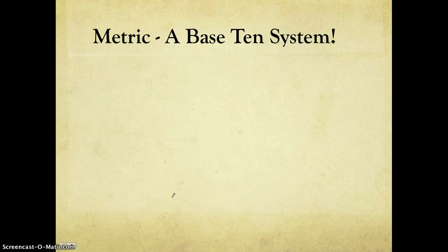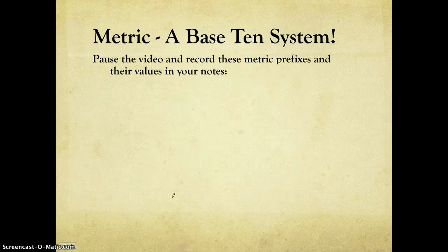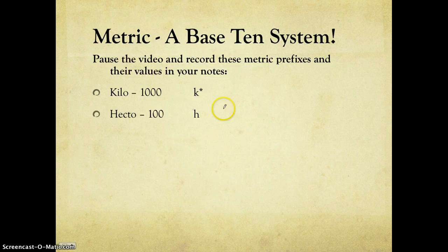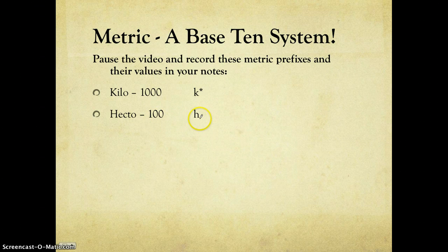Okay, so as you know, metric is a base 10 system. I'm going to show you the prefixes right now. This should not be a great surprise to you. Please do record them. Kilo means 1,000 times our base unit. We abbreviate it with a lowercase k. Hecto, 100 times the base unit, lowercase h.